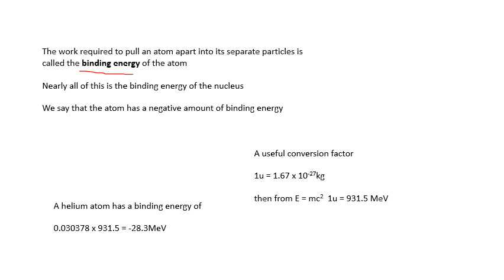A very useful conversion factor: one atomic mass unit is about 1.67 × 10⁻²⁷ kilograms. If you do E=mc², convert your difference in mass to kilograms and apply E=mc², you get that one atomic mass unit is equivalent to 931.5 mega electron volts — you'd be given that in an exam. So for a helium atom, we worked out the difference in mass and using our conversion factor, we get that the binding energy of a helium atom is 28.3 MeV, or strictly speaking, minus 28.3 MeV.